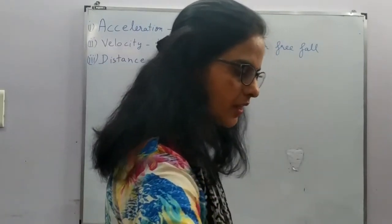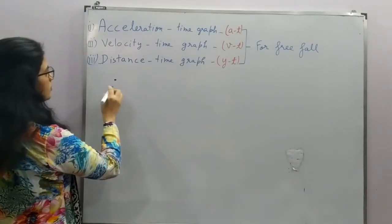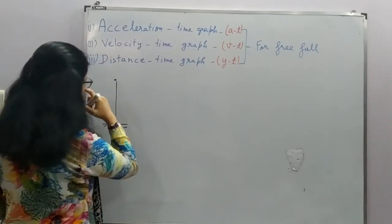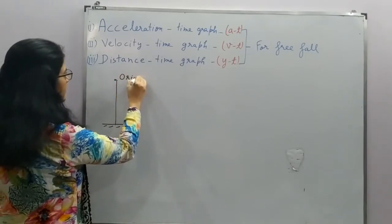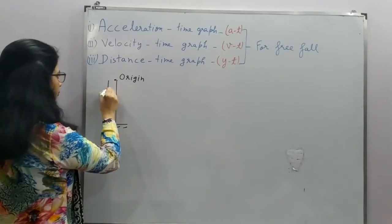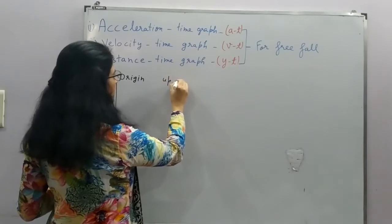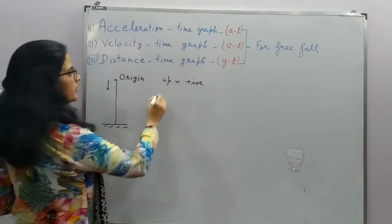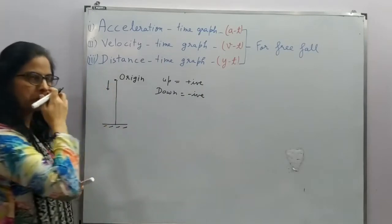So for that, let us seek a case when an object is dropped from some height. Let us consider this point as origin. The object is falling down. Concept here is that the up motion is taken positive and the down motion is taken negative.